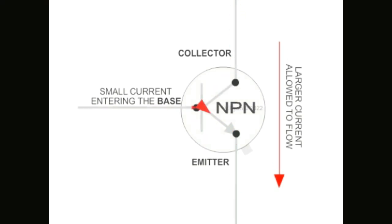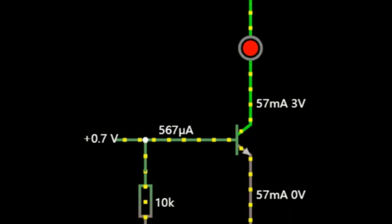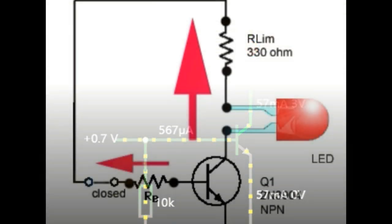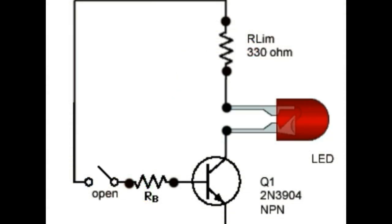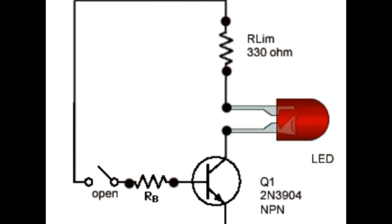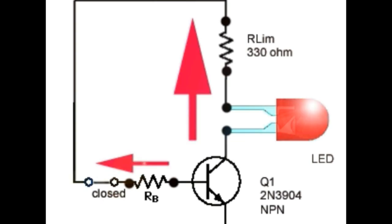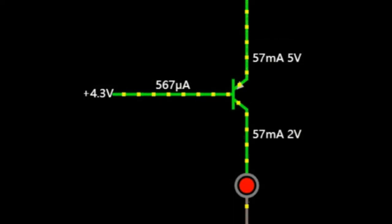In an NPN transistor, the emitter emits electrons to the base. The base controls the number of electrons emitted. Most of the emitted electrons are collected by the collector and then circulate in the circuit. A PNP transistor works in a similar way, but in reverse.